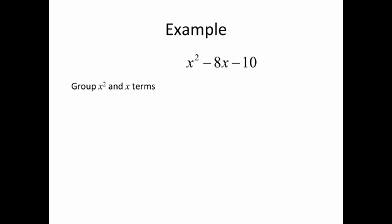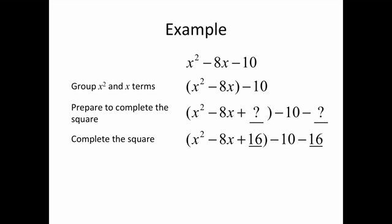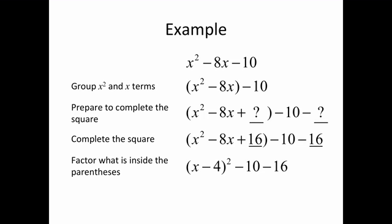We'll go through the same process. We'll group the x squared and x terms. We'll prepare to complete the square by adding an empty block here, and we're going to subtract out the units outside. We're now going to complete the square by taking half of negative 8 — that's negative 4 — then squaring that to get 16. We're going to add 16 inside the parentheses and subtract it outside. Next, we'll factor what's inside the parentheses, and this factors to x minus 4 squared. Then simplify outside the parentheses to get x minus 4 squared minus 26.